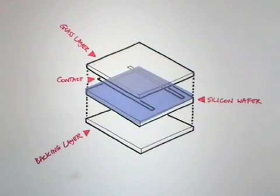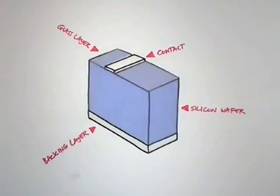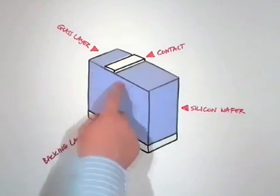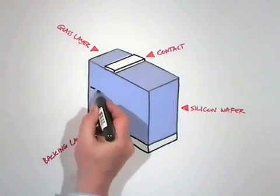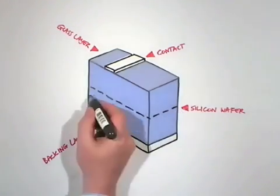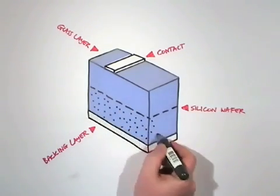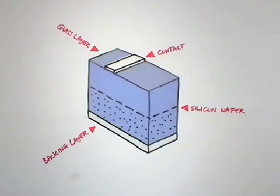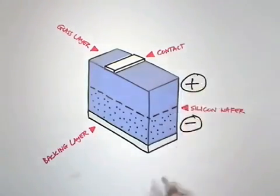Most PV cells are silicon-based. Silicon is chosen for its semi-conducting potential and easy availability. The silicon wafer is very, very thin. Each side of the wafer has been treated differently. These treatments affect the behavior of the electrons in the silicon atoms, creating an electrical field at the internal interface. One side has more loose electrons bouncing around and is negatively charged. The other has more atoms with holes in them where electrons could go — this side is positively charged.